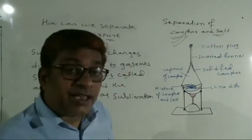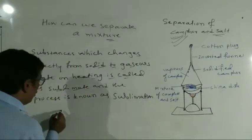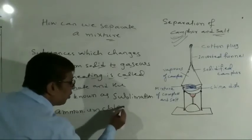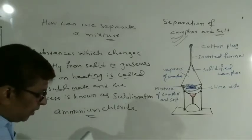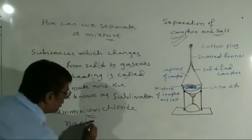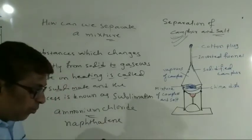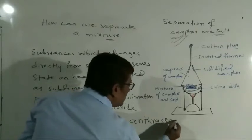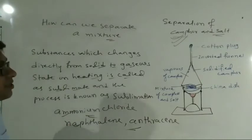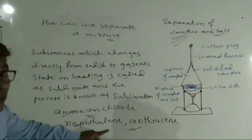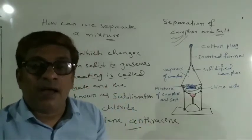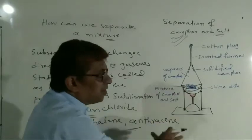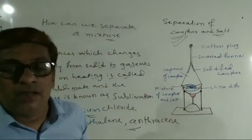This process is called sublimation. Some examples of sublimate substances: ammonium chloride, anthracene, and also naphthalene. These are the examples of sublimate substances. In this way, by using this sublimation process, we can separate the sublimate substance.